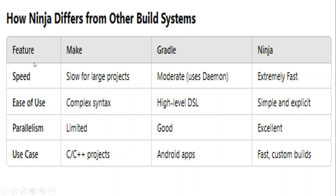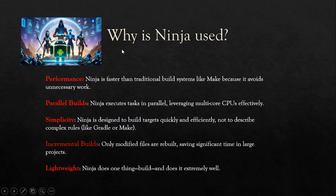Taking parallelism as the next criteria: Make is limited and cannot perform multiple tasks at a time, Gradle is quite good at handling multiple tasks, and Ninja is excellent. For use case: Make is basically used to build C and C++ projects within the Android system, mostly the native side. Gradle is used for Android applications. Ninja, being very fast, is used for custom builds, framework-related builds, framework-related projects, and packages. So this was the difference between Ninja, Gradle, and Make.